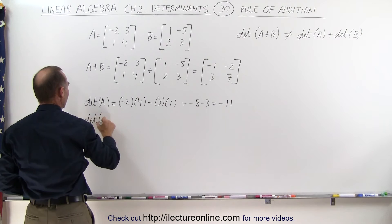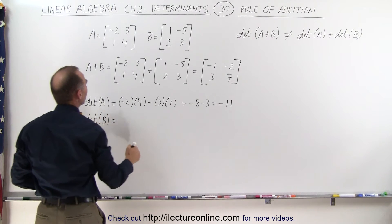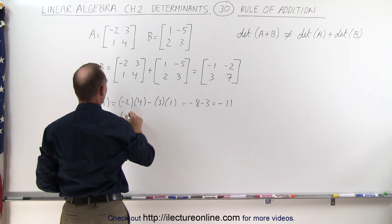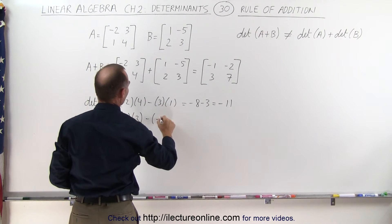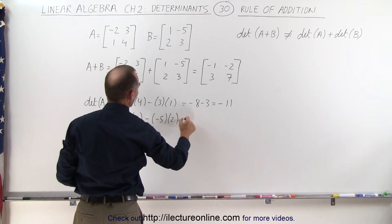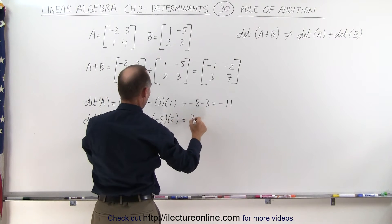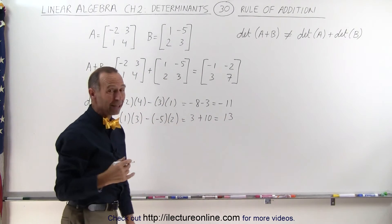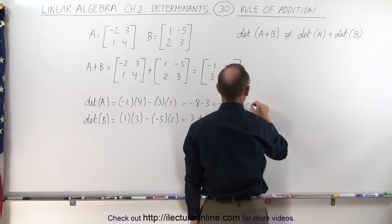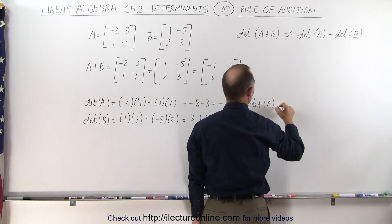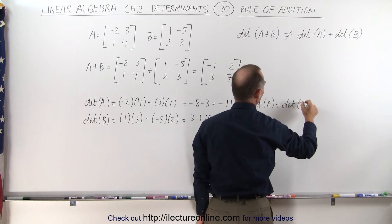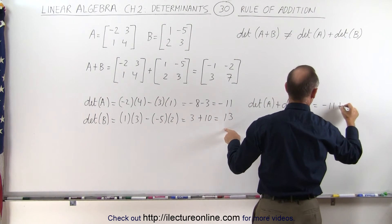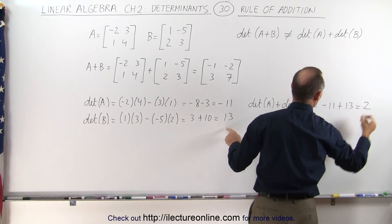Now the determinant of B. That is equal to the product of those two minus the product of those two, so it's 1 times 3 minus negative 5 times 2. That would be 3 plus 10, which is 13. Notice if we add those two together — the determinant of A plus the determinant of B — that gives us minus 11 plus 13, which equals positive 2.